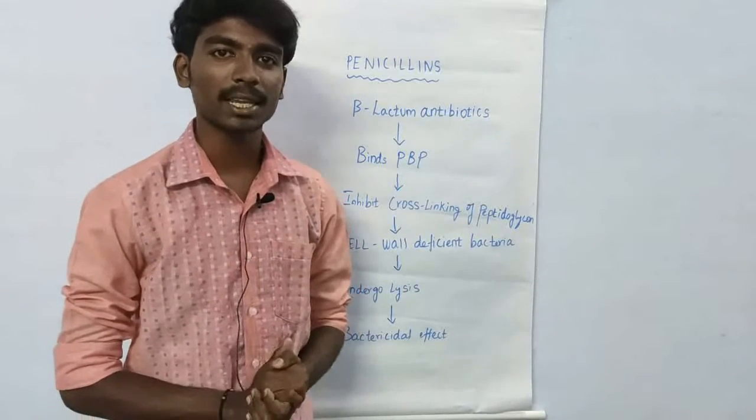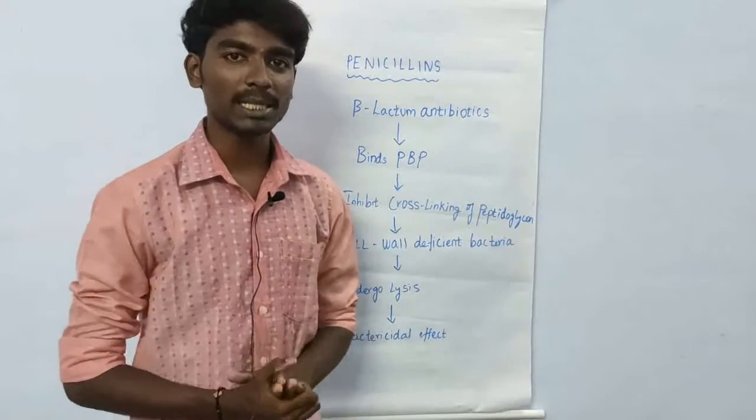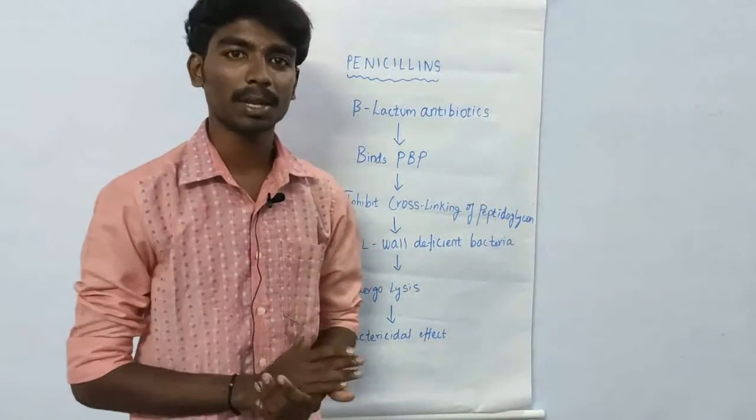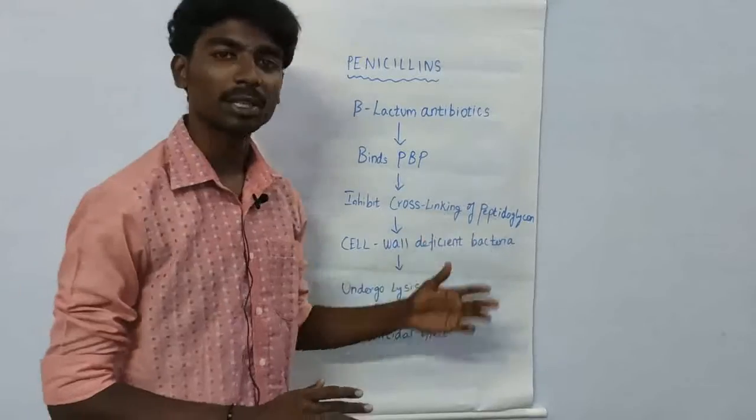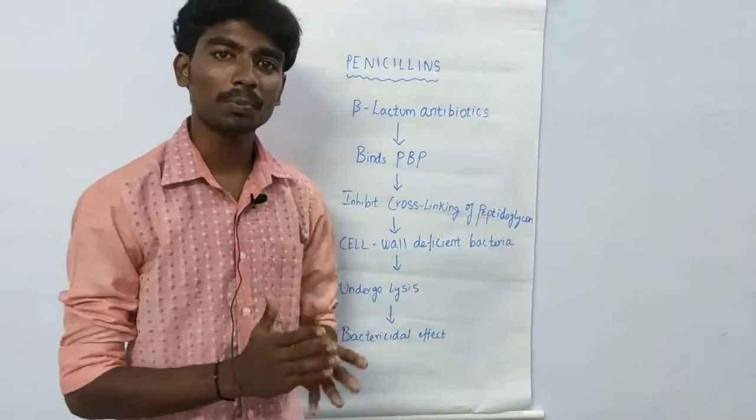Next is cephalosporin, tetracycline, macrolides, and aminoglycosides. This is the mechanism of penicillin. The main part is peptidoglycan, which is present in the cell wall as one important component.